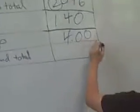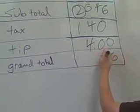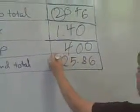6 plus 0 plus 0 equals 6. 4 plus 4 plus 0 equals 8. 0 plus 1 plus 4 equals 5. And 2 plus nothing equals 2. So I got $25.86.